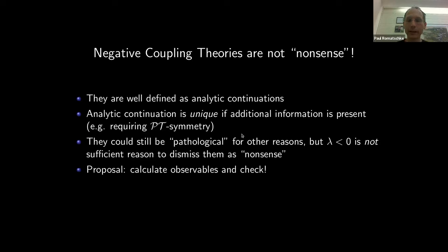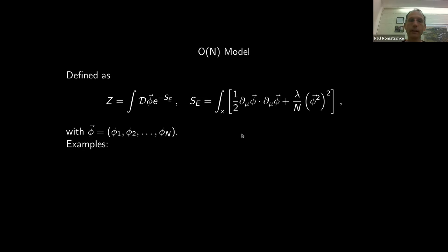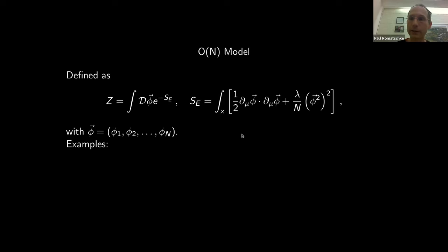My proposal is to not dismiss these theories, but rather sit down, calculate observables, and see whether they actually make sense. For quantum mechanics we have experimental evidence that that's the case. What I want to do is introduce the notion of negative coupling phi^4 theories in actual four dimensions. Because I'll be dealing with negative or very large couplings, a perturbative framework will not work — I need a non-perturbative field theory.